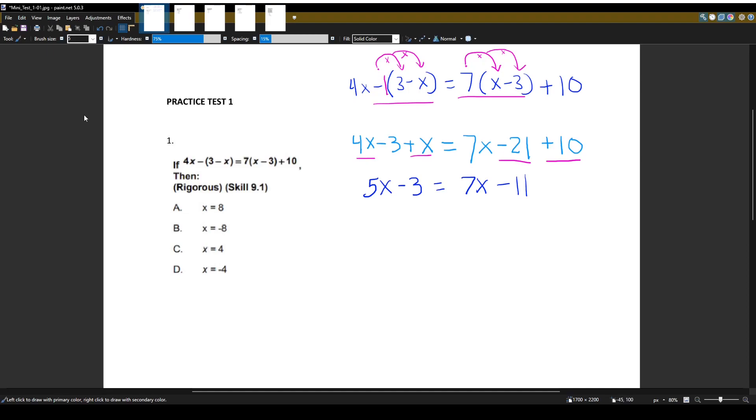All right, so we're almost done here. Now we want to get all the terms with the x on one side of the equation and the terms without an x on the other side of the equation. It doesn't matter if you move all the x terms to the left and all the numbers to the right or if you move all the x terms to the right and move all the numbers to the left. It's a choice. The way I like to do it is I like to look at the x terms. So I'm looking at this 7x here and I'm looking at this 5x. And I'm saying to myself, which one's bigger? The 7x is bigger. So because the 7x is bigger on the right side, I want to move all my x terms to the right side. Let's go ahead and do that.